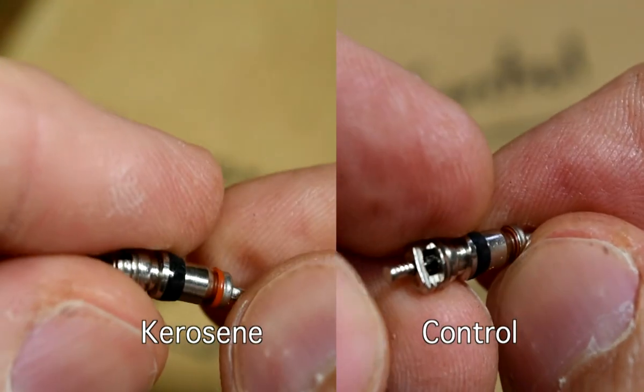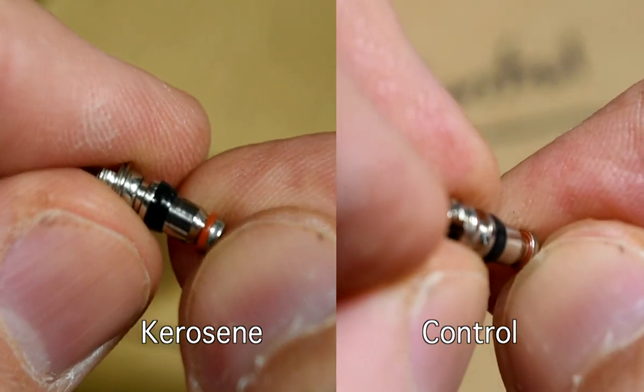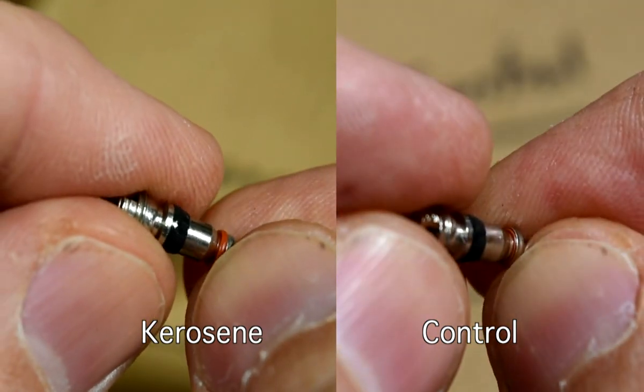For comparison, here's the control. Notice how the seal is all hidden away. The kerosene has clearly caused the rubber to swell.